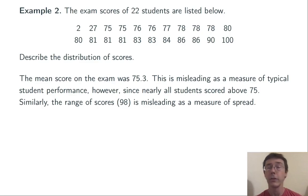Similarly, the range of scores (98) is misleading as a measure of spread. Yes, the values range from 2 to 100, so there's a range of 98. However, the vast majority of students are in a fairly narrow band.